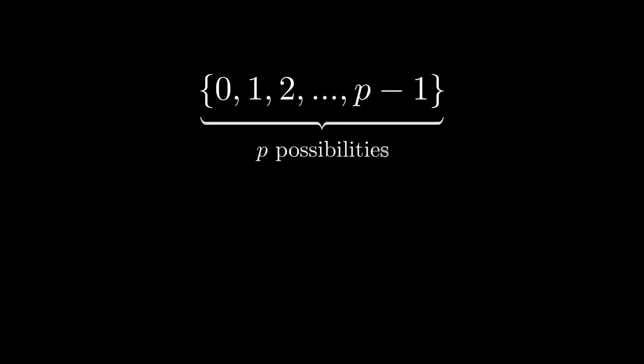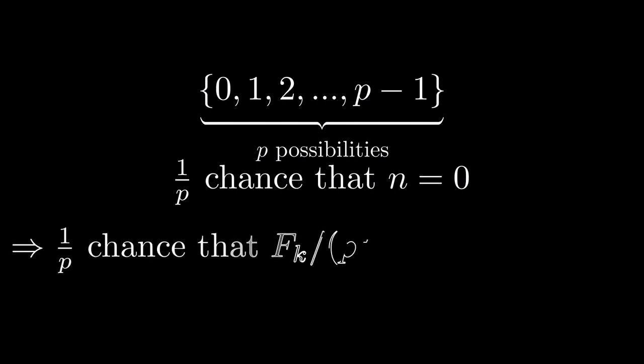Since there are p possibilities, if there is an equal chance of it being any of those, there's a 1 in p chance that it's 0 times p, or exactly 0, which is what it needs to be if p squared also has a Pisano period of k.